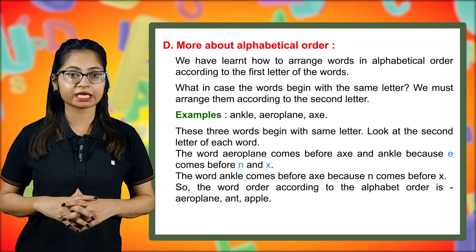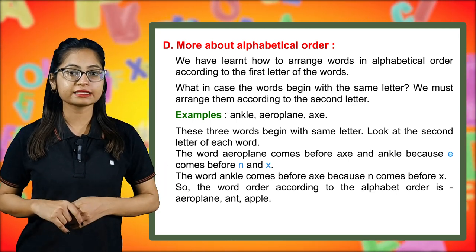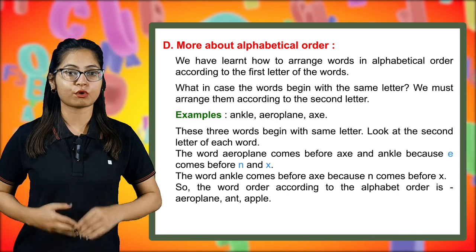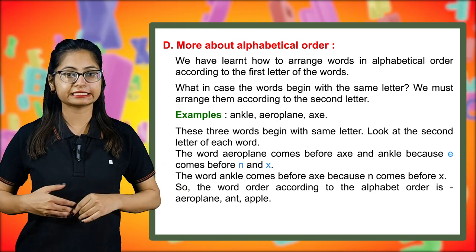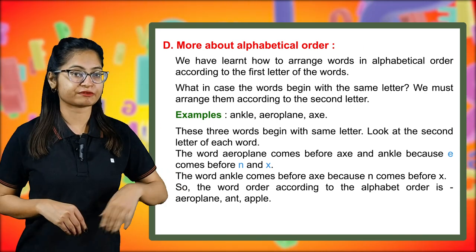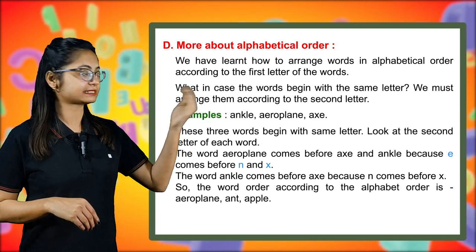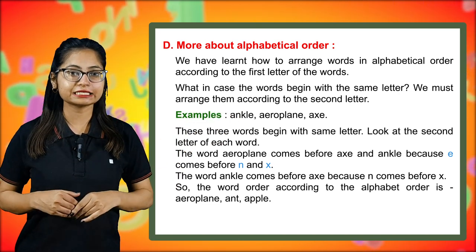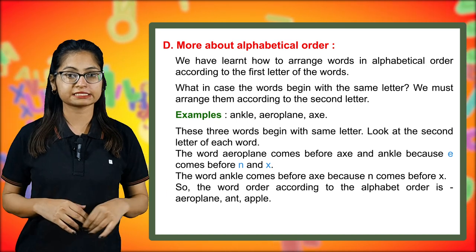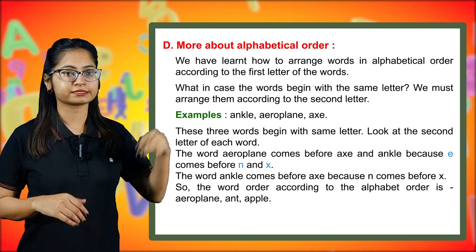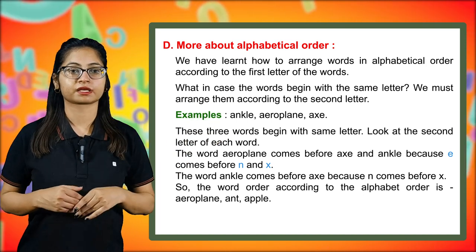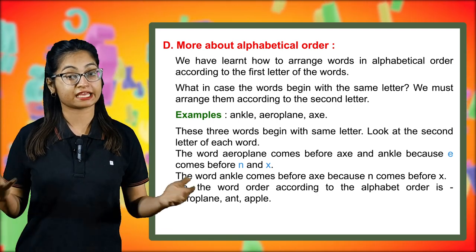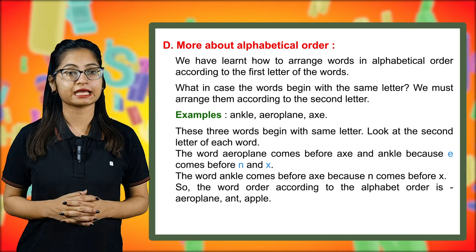These three words begin with the same letter. Look at the second letter of each word. The word aeroplane comes before axe and ankle because E comes before N and X. The word ankle comes before axe because N comes before X. So the alphabetical order is: aeroplane, ankle, and apple.